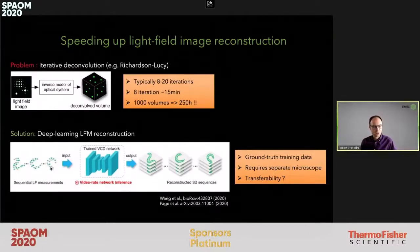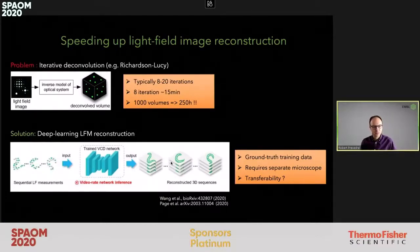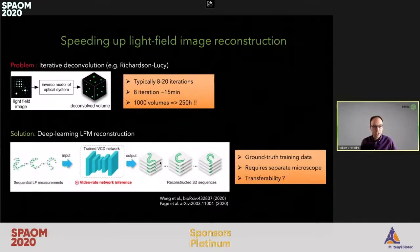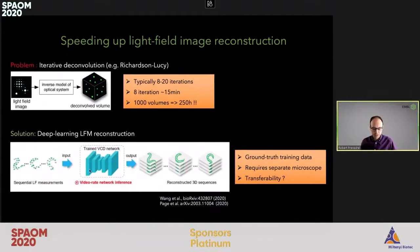For example, they put C. elegans on a confocal microscope, trained the networks, and then did the light field imaging and reconstructed. But this raised questions for us about how well these networks generalize, how well they can be transferred, and whether there is any way to check how well these networks are doing.